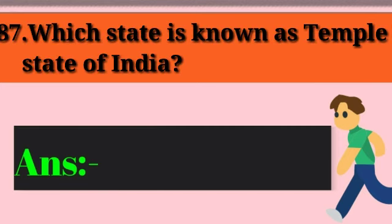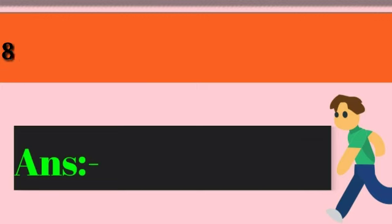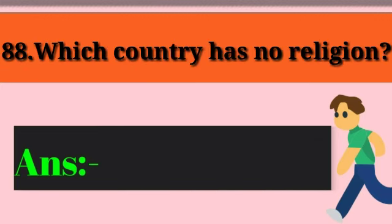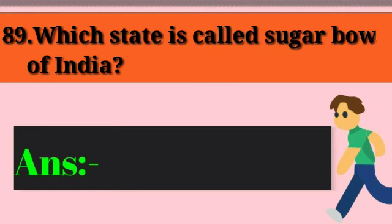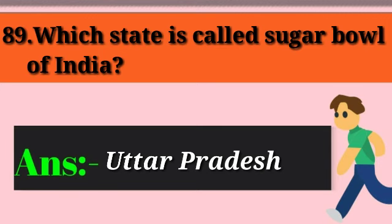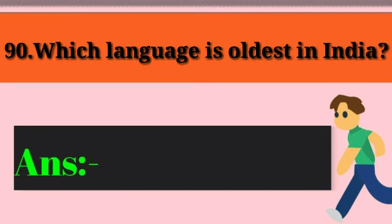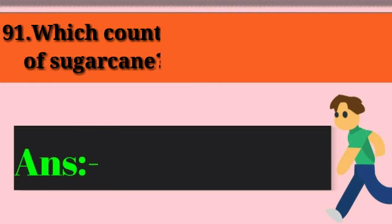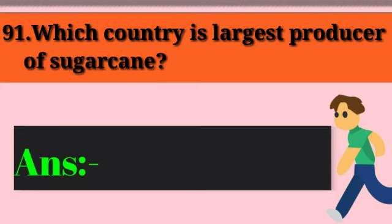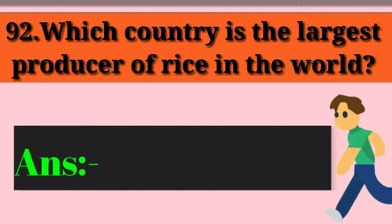Question 87: Which state is known as the temple state of India? Answer: Odisha. Question 88: Which country has no religion? Answer: Uttar Pradesh. Question 89: Which state is called the sugar bowl of India? Answer: Uttar Pradesh. Question 90: Which language is oldest in India? Answer: Sanskrit. Question 91: Which country is the largest producer of sugarcane? Answer: Brazil.